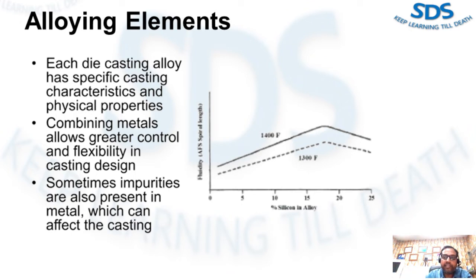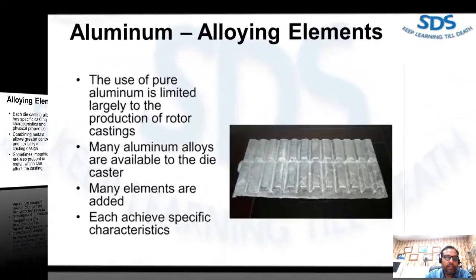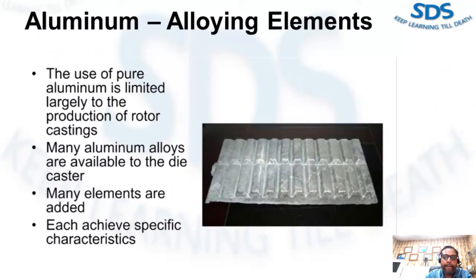You can also use this information to help determine the effect various elements and contaminants in the melt will have on the casting. Due to the relatively low strength and poor castability, the use of pure aluminum is limited largely to the production of rotor castings. The electrical conductivity of motor rotors is extremely important, which is why, despite its poor casting characteristics, pure aluminum is used.